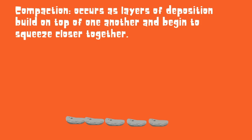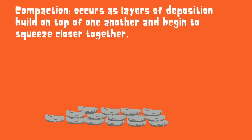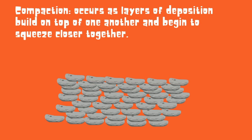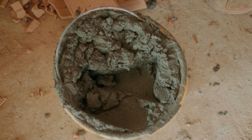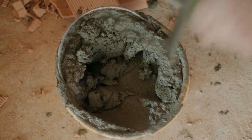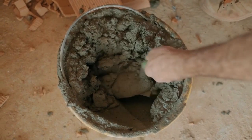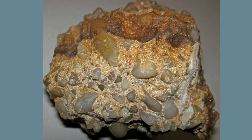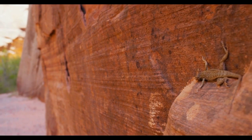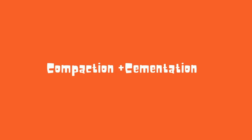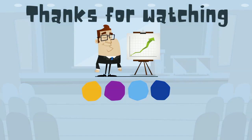Over time, compaction occurs as layers of deposition build on top of one another and begin to squeeze together. Cementation occurs when the minerals in the water act like glue and cement all the pieces together. The end result is a sedimentary rock. This process of loose sediment hardening into rock by cementation and compaction collectively is called lithification.